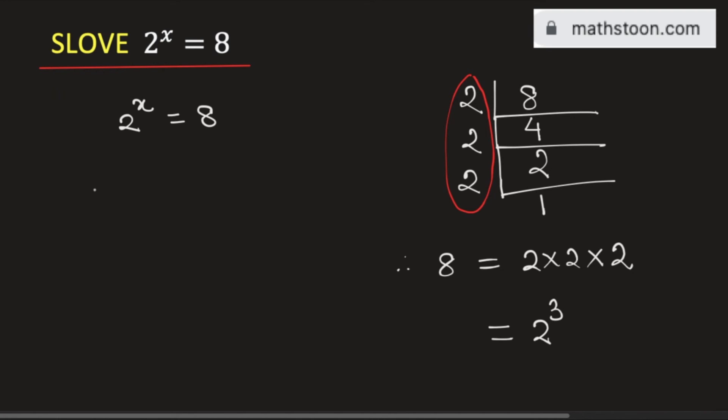So using this fact, we can write this equation as 2 to the power x is equal to 2 to the power 3. As we have the same base, the exponent will be equal. In other words, we get x is equal to 3. So this is the solution of the given equation and this is our final answer. Thank you for watching.